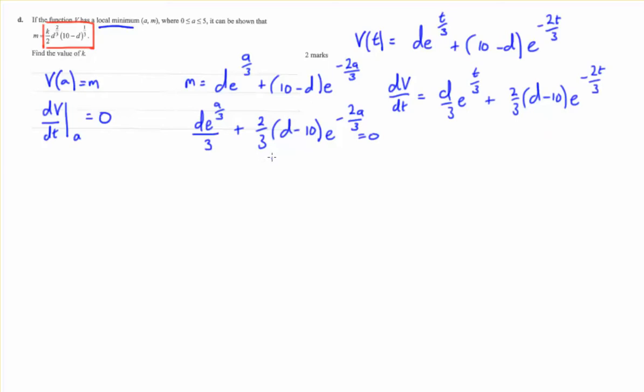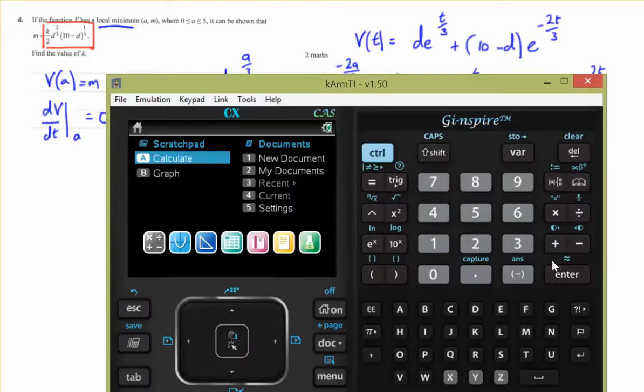Okay, well we've got A and D in this expression. We've got A and D in this expression. So we can call this equation 1 and we'll call that equation 2. So what we really want to do is we want to take equation 2, we want to make A the subject, and then we should be able to sub it into equation 1. So let's look at that on our CAS.